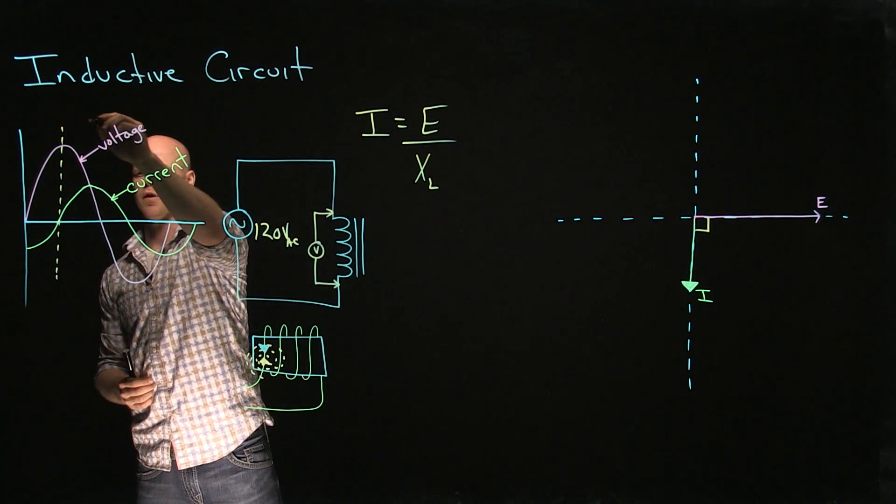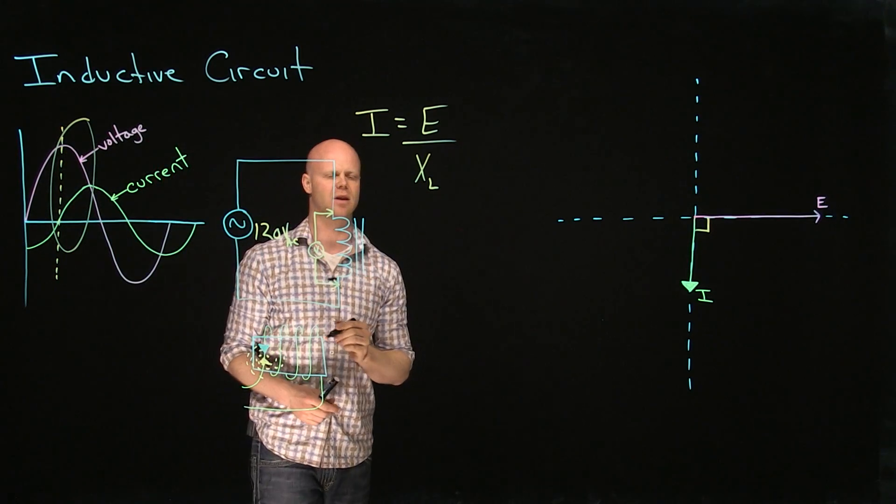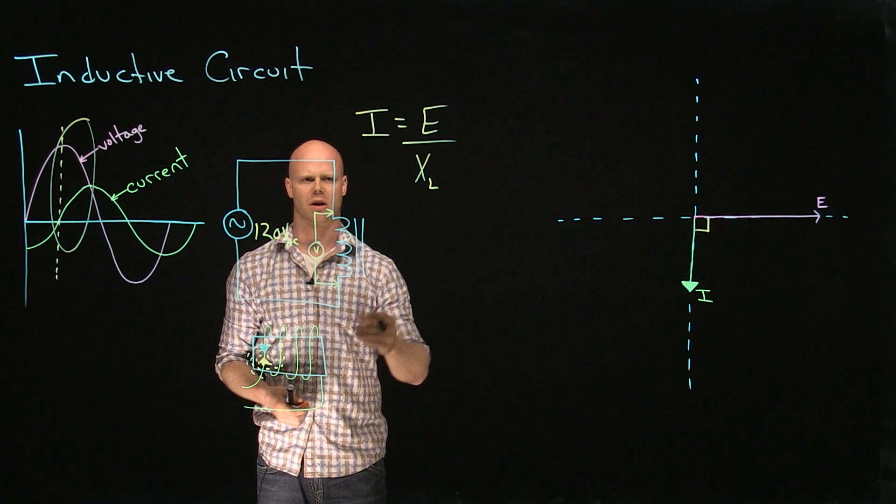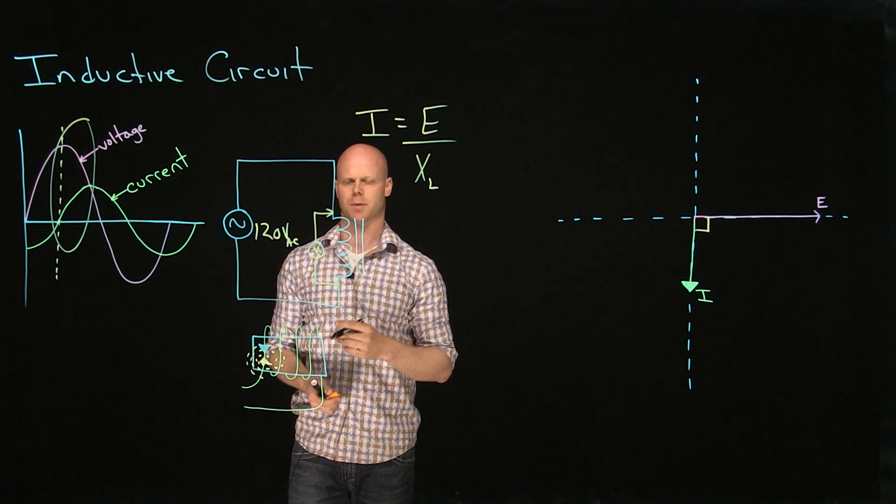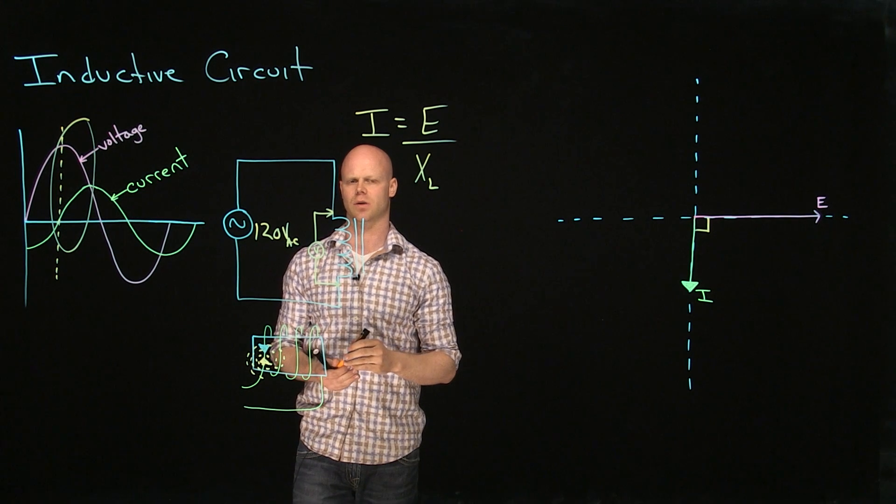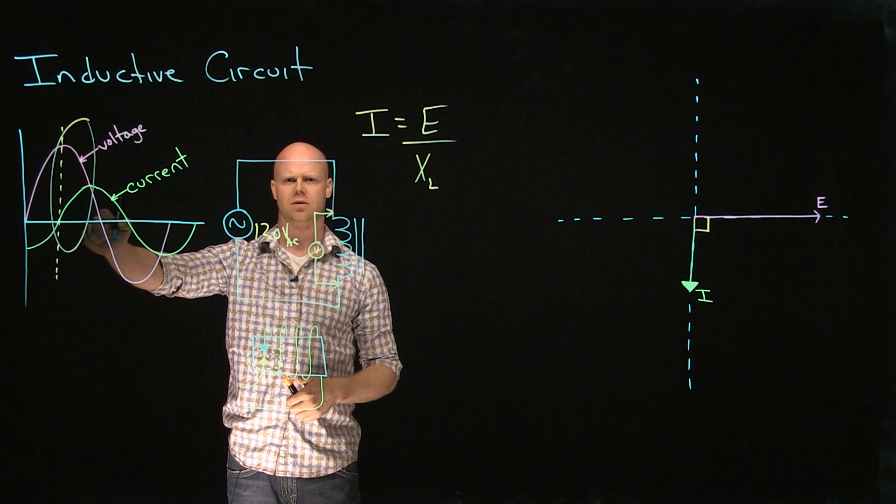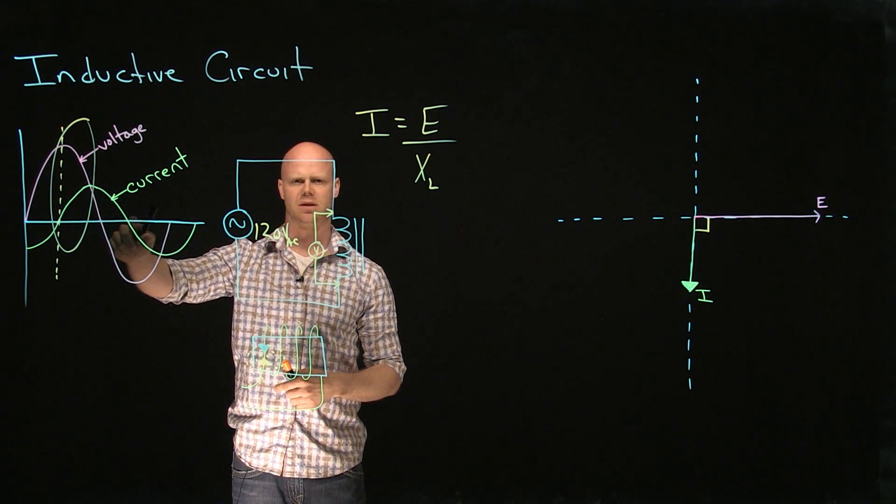This part of our waveform right here is often a point of confusion because it appears that we have a decrease in voltage while we have an increase in current, which would go against what Ohm's law is saying. But with the properties of this inductor, we know that there is that displacement in time. So when we have a decrease in voltage, after a period of time, we have a decrease in current.